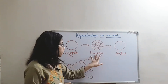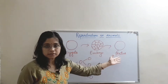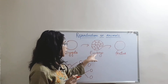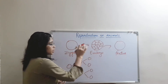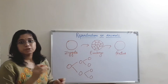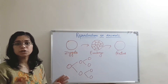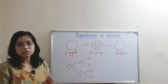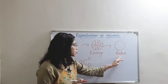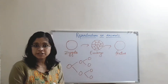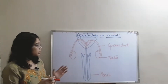Embryo after further division will form a fetus. We can differentiate embryo from fetus by saying that embryo is a structure in which many number of cells are there but there is no differentiation of body parts of the baby. Whereas in fetus, we are able to differentiate between all the body parts.